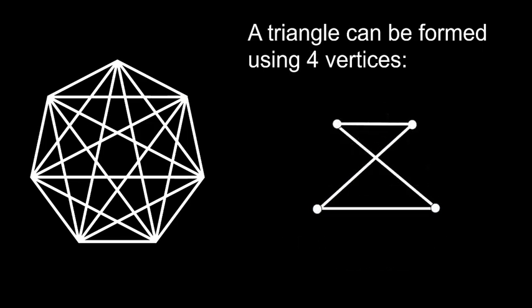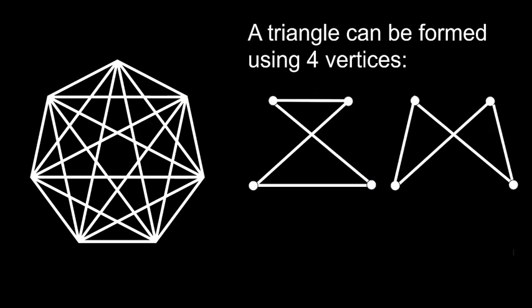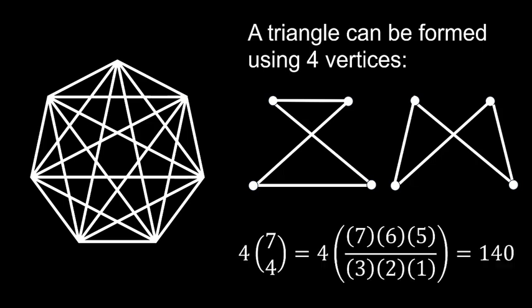Considering a set of four vertices, each set can form four distinct triangles. By selecting four vertices from the seven of the heptagon, represented as 7 choose 4, and multiplying by the four triangles each combination yields.